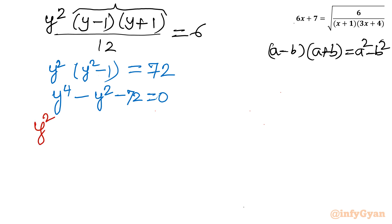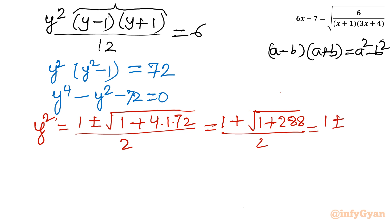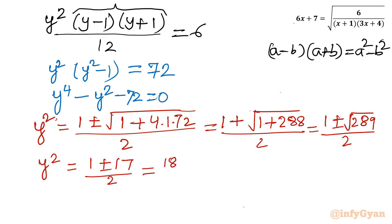Using the quadratic formula with y² as the variable: y² equals [1 ± √(1 plus 4 times 72)] over 2, which is [1 ± √289] over 2. Since √289 equals 17, we get y² equals (1 plus 17)/2 equals 9, or y² equals (1 minus 17)/2 equals minus 8.